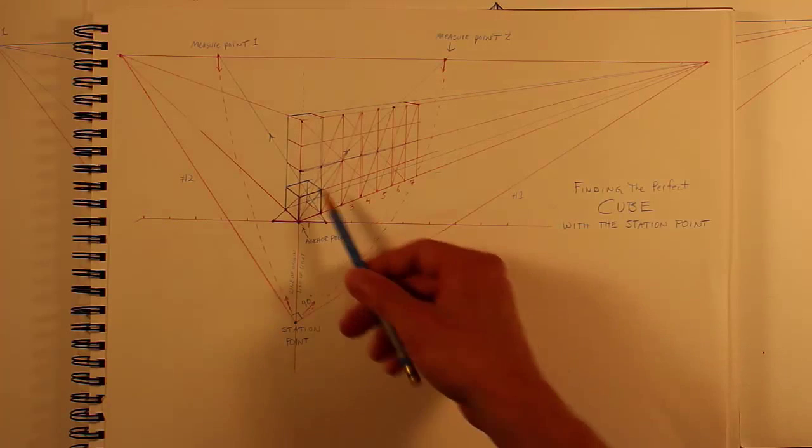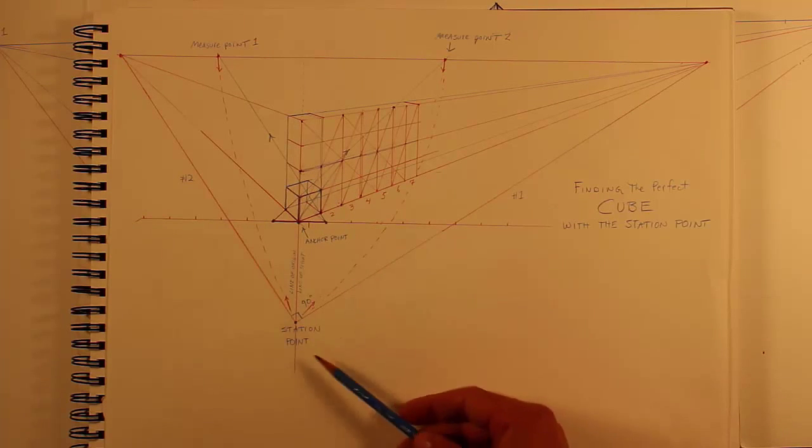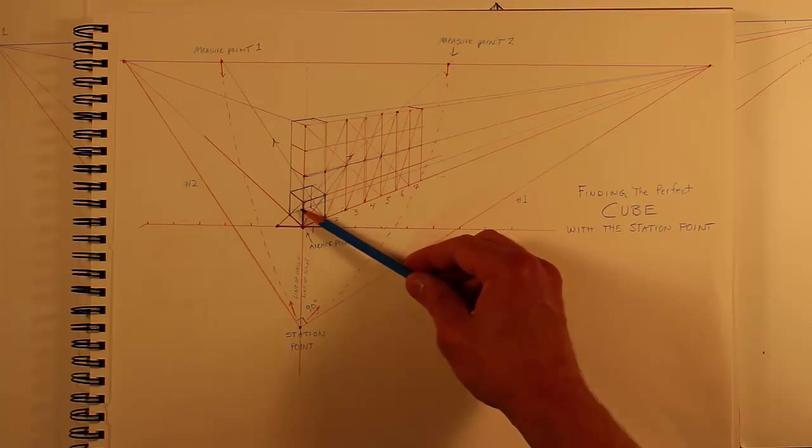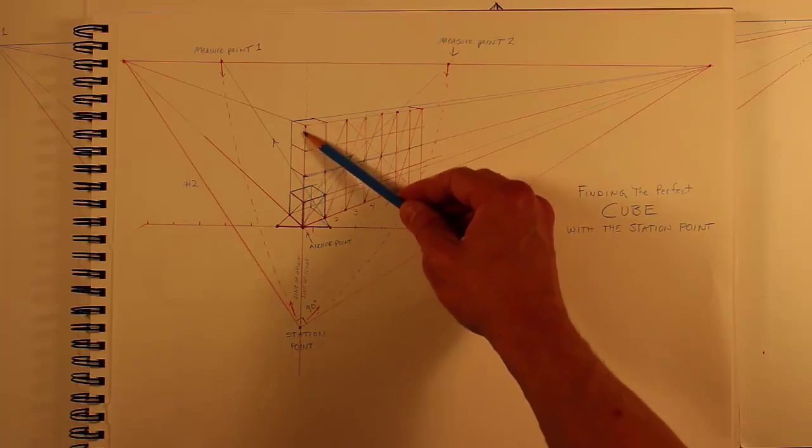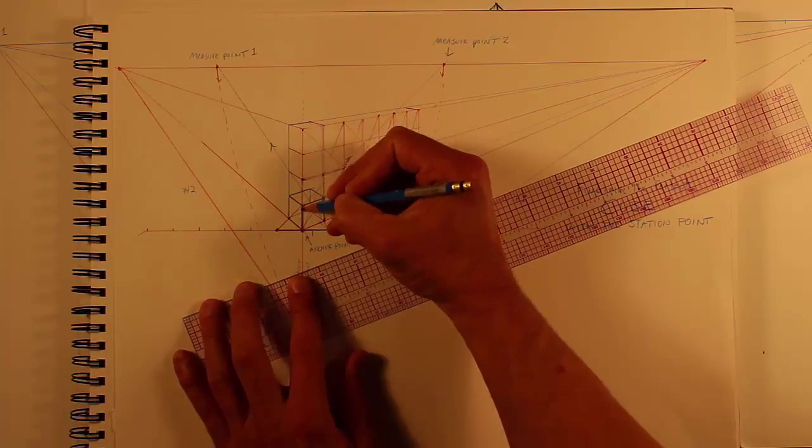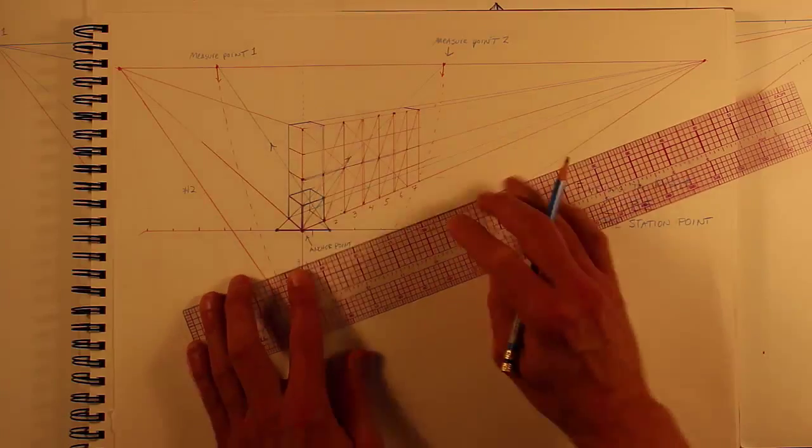So this is the station point technique of getting a cube in perspective, and once I found that unit I expressed it up this line, and then I found the center point, which is of course two cubes of four.